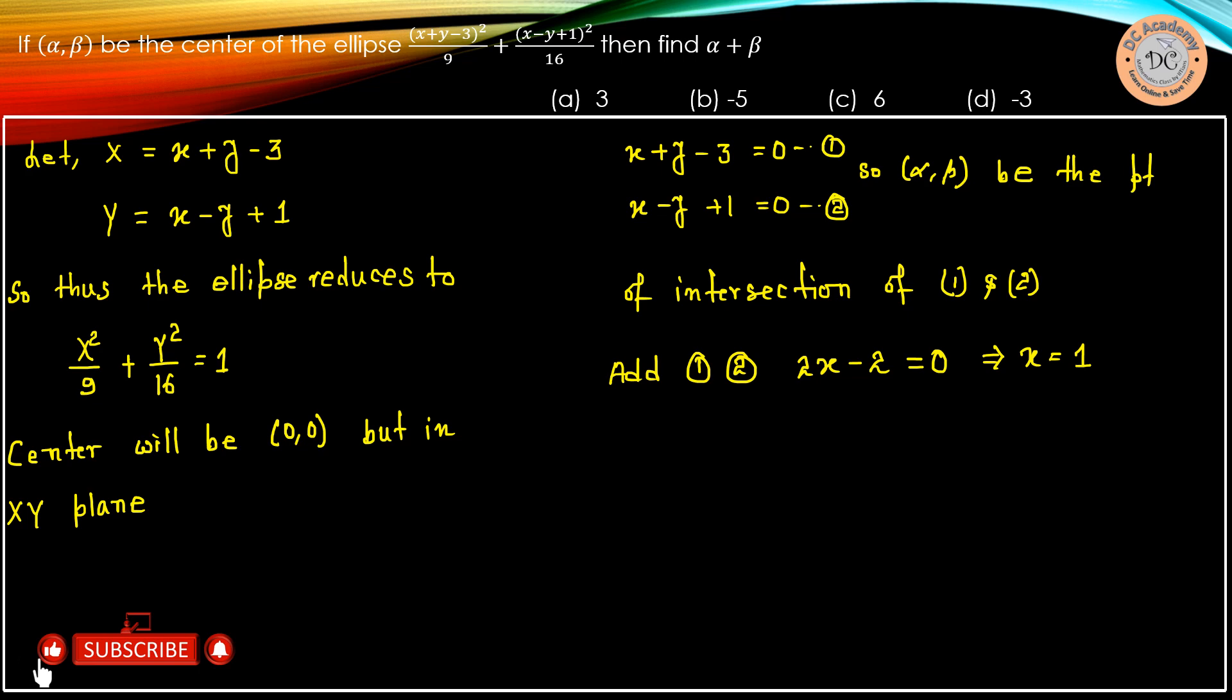And if I substitute x equals 1 in equation 1, then 1 plus y minus 3 equals 0, which implies that y is equal to 2.